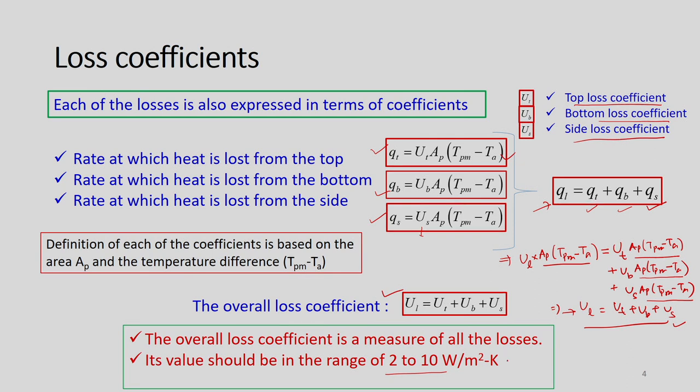The overall loss coefficient UL is a very important parameter to measure all the losses. Each value should be in the range of 2 to 10 watts per meter squared per Kelvin. If this value falls within this range, then our design can be considered acceptable; otherwise losses will be very high and efficiency will suffer. Once we know UL, we substitute it into the energy balance equation to calculate the useful heat gain.